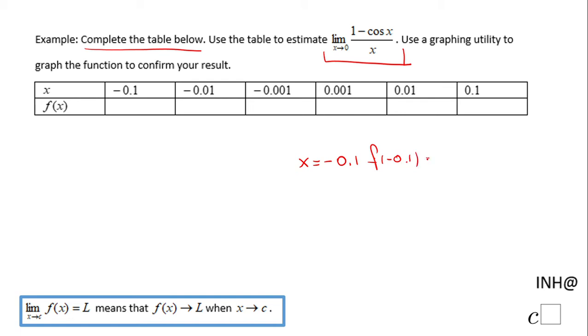And that will be 1 minus cosine of negative 0.1 over negative 0.1. Here's a calculator. Be sure the calculator is in radian. And I end up with negative 0.05.